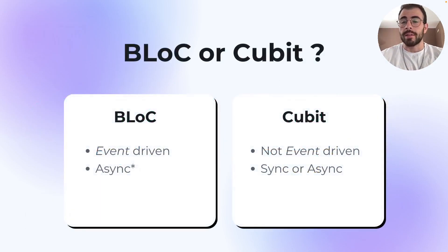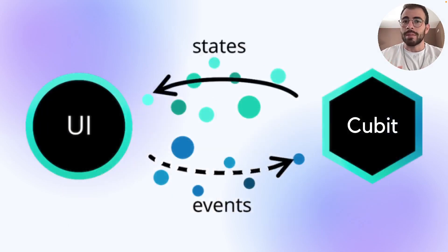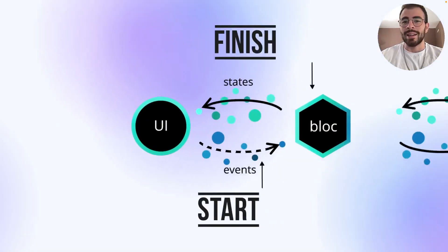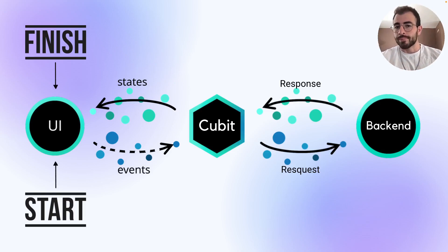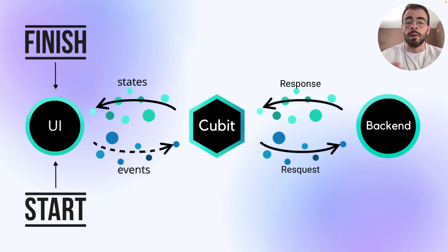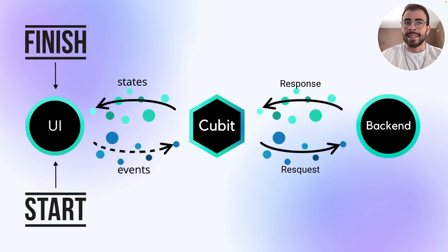Now what about the Cubit? It's a little bit different. In the diagram, you'll notice the event arrow is now a dotted line, because the Cubit doesn't need an event to be triggered. Going back to our login example: when the user clicks the login button, that's a big physical action from the user, so you'd want to use a BLoC there. But once the user is logged in and redirected to the home screen, and the app needs to load a list of posts — there is no user interaction. The app just loads those posts by itself, so you might want to use a Cubit there.